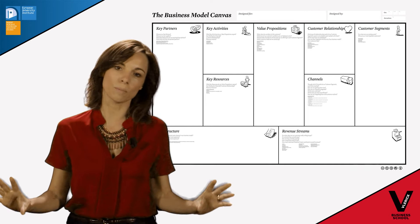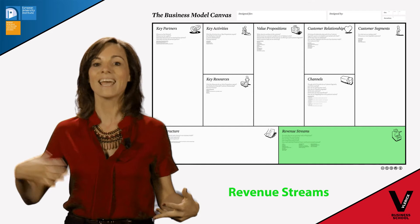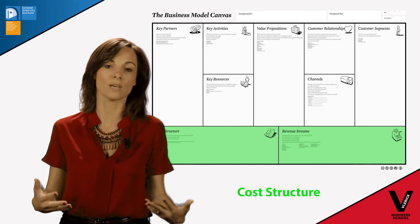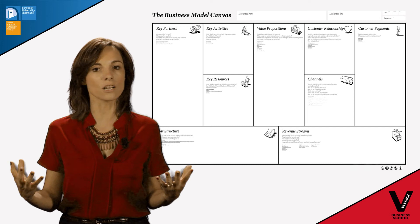Moving to the bottom side of the Canvas, we have the revenue stream coming in from customers and the cost side of our activities. Connect these two together and obviously you have the bottom line flowing out of the business model. That's in a nutshell the different components of the business model Canvas.